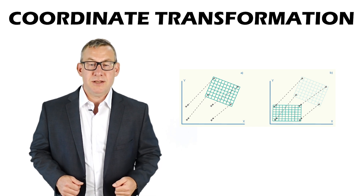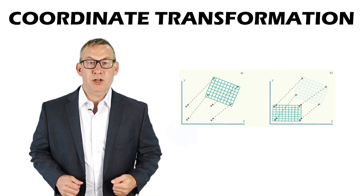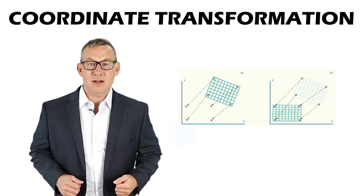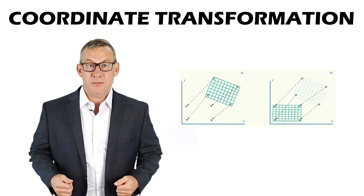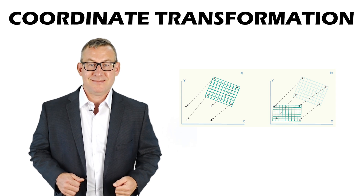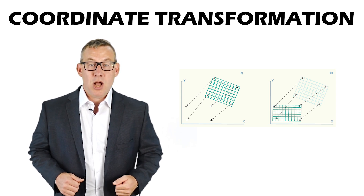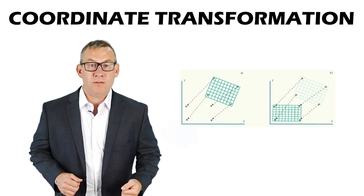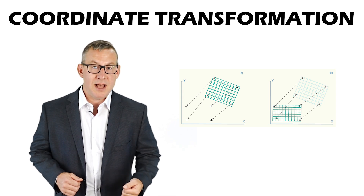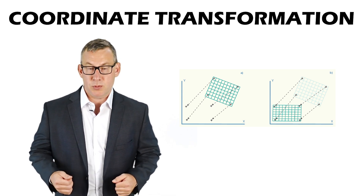Coordinate transformation brings spatial data into an Earth-based map coordinate system so that layers align. It is also known as registration and is commonly used to convert newly digitized data. Transformations are for geo-referencing digitized data, not for converting between projections.